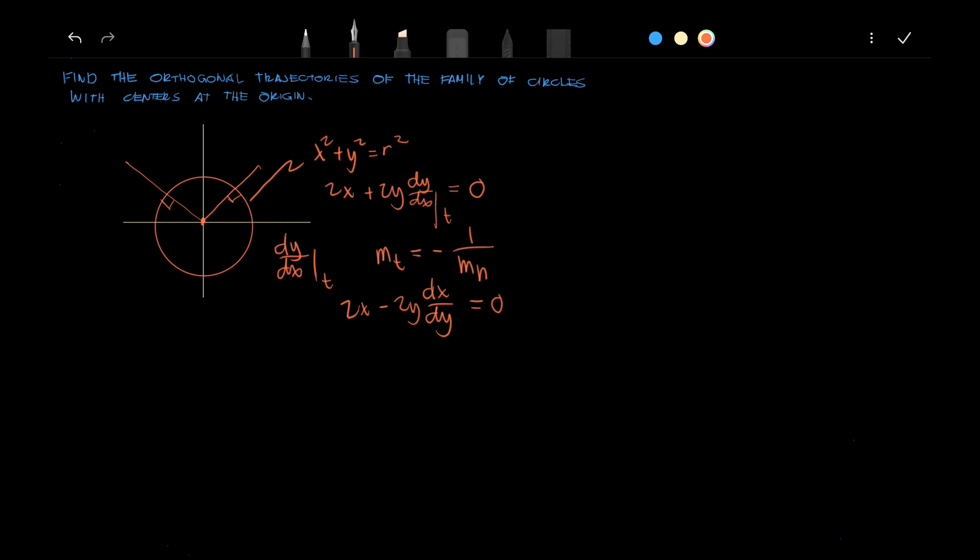We have 2x dy minus 2y dx equals 0. Simplify and use the variable separable method. We have 1 over y dy minus 1 over x dx equals 0.